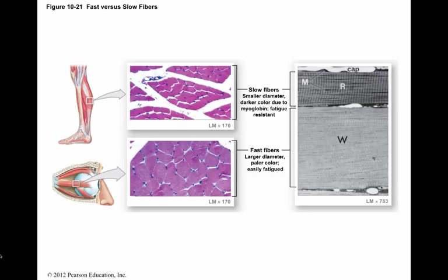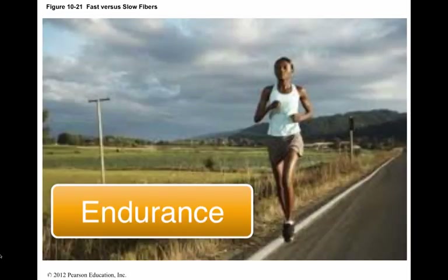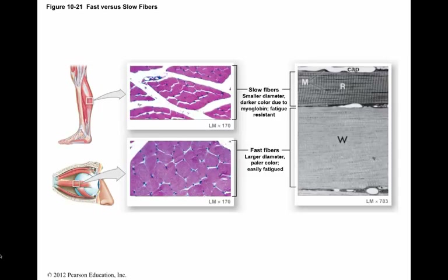Muscle performance capabilities depend on muscle fiber type and physical condition. A muscle's performance involves force, which is the maximum amount of tension produced by a particular muscle, and endurance, which is the amount of time during which the individual can perform a particular activity. Several factors determine the performance capabilities of any skeletal muscle: the type, distribution, and size of muscle fibers in the muscle, as well as physical conditioning and training.